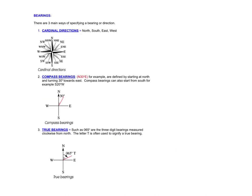Now let's talk about bearings. Bearings give us a way of pointing in directions. Cardinal directions are north, south, east, and west. You have a starting point, and if someone goes directly east, that's 90 degrees from north. Between direct north and direct east is 90 degrees.